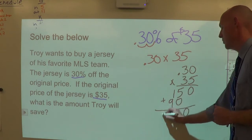Decimal 0.30 times thirty five. That would be zero, fifteen, zero, nine. Add them up.